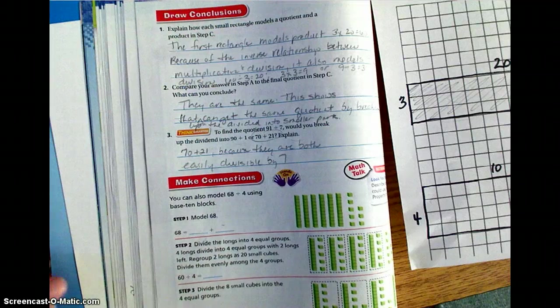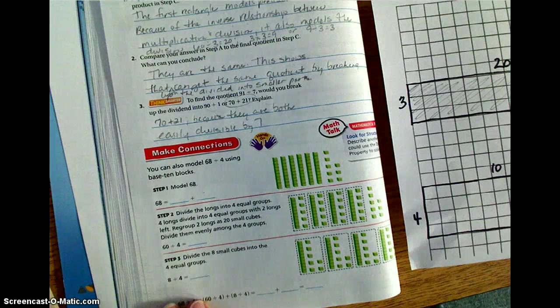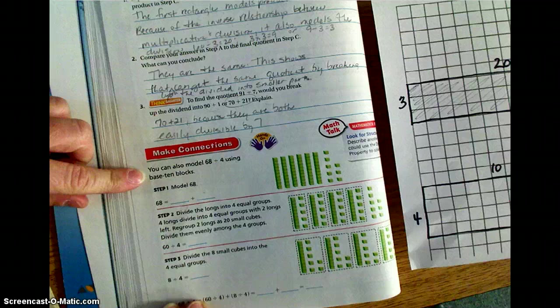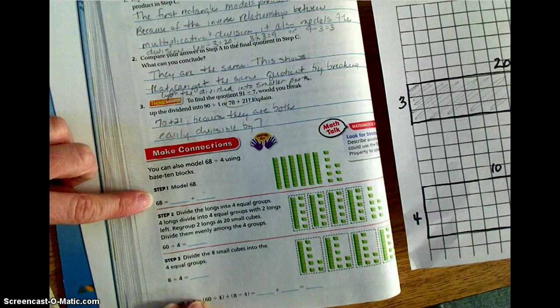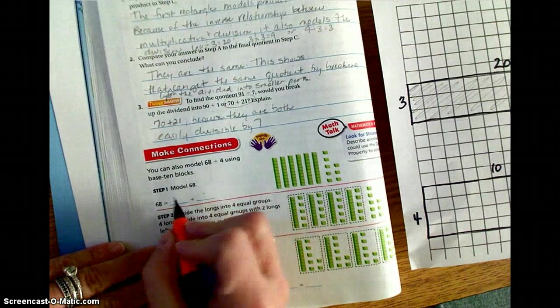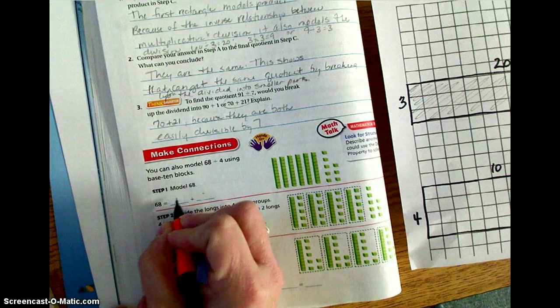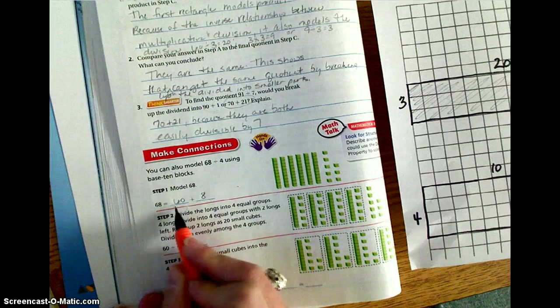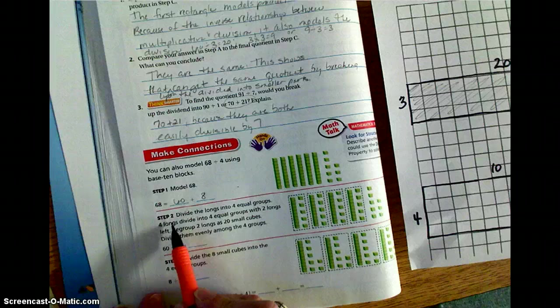All right, another method that you can use in division, making connections. We can also model using our base 10 blocks. So if we use our base 10 blocks to represent 68 divided by 4, step 1, we're going to look at the model. 68 is going to break into 60, because we have 6 blocks of 10. So we're going to have 60, and then we have 8 singles. So 60 breaks into 60 plus 8. Then, in order to make it even, we're going to divide the longs, which are the 10s.